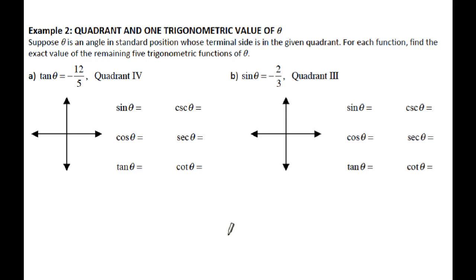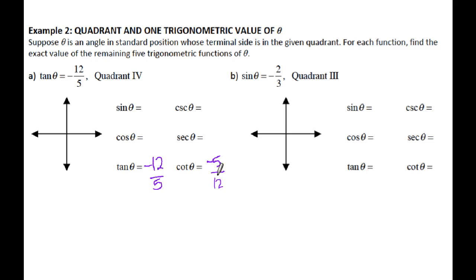For this next example, we're doing very similar things, except I'm not giving you a point — instead, I'm giving you one ratio and the quadrant that we're in. We know that tangent is negative 12 fifths, so cotangent is negative 5 twelfths. It tells me I am in the fourth quadrant, so I'm going to sketch my triangle in the fourth quadrant with theta there.